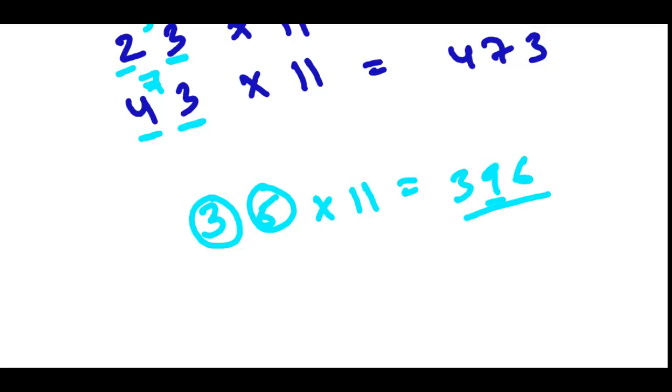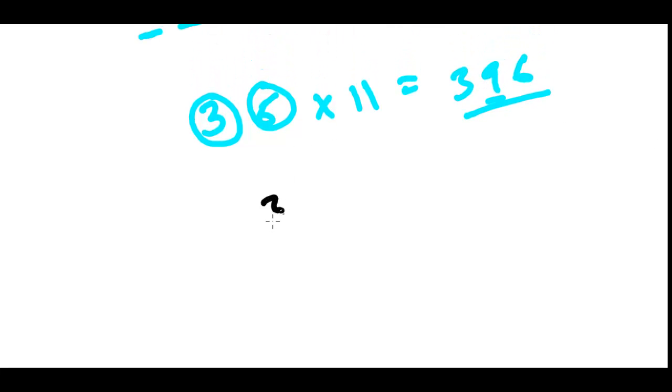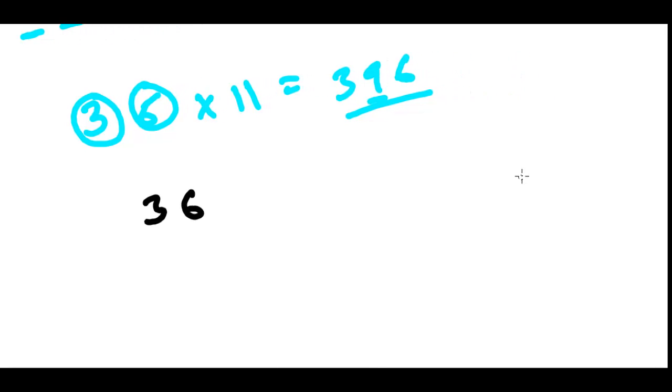So what is the trick behind this? That's very tricky. No, very simple. Let me tell you. If I'm going to multiply, let's say for a while, I'm just taking this example. 36 times 11. And I'm going to take two examples.